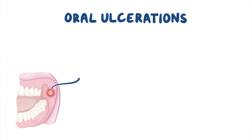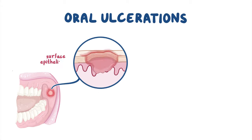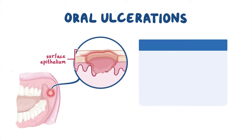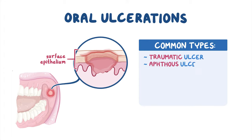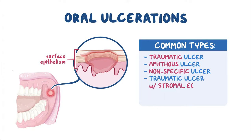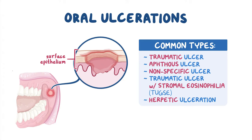Oral ulcerations are lesions in the mouth with loss of surface epithelium. There are several causes of oral ulcers, often indicated by their name. For instance, a traumatic ulceration is an ulcer developed after an injury. Other common types include the aphthous ulcer, nonspecific ulcer, traumatic ulcer with stromal eosinophilia (or TUGSE), and herpetic ulceration. Across all types, there is no difference in prevalence by gender, but the general prevalence, location, and age vary by etiology.